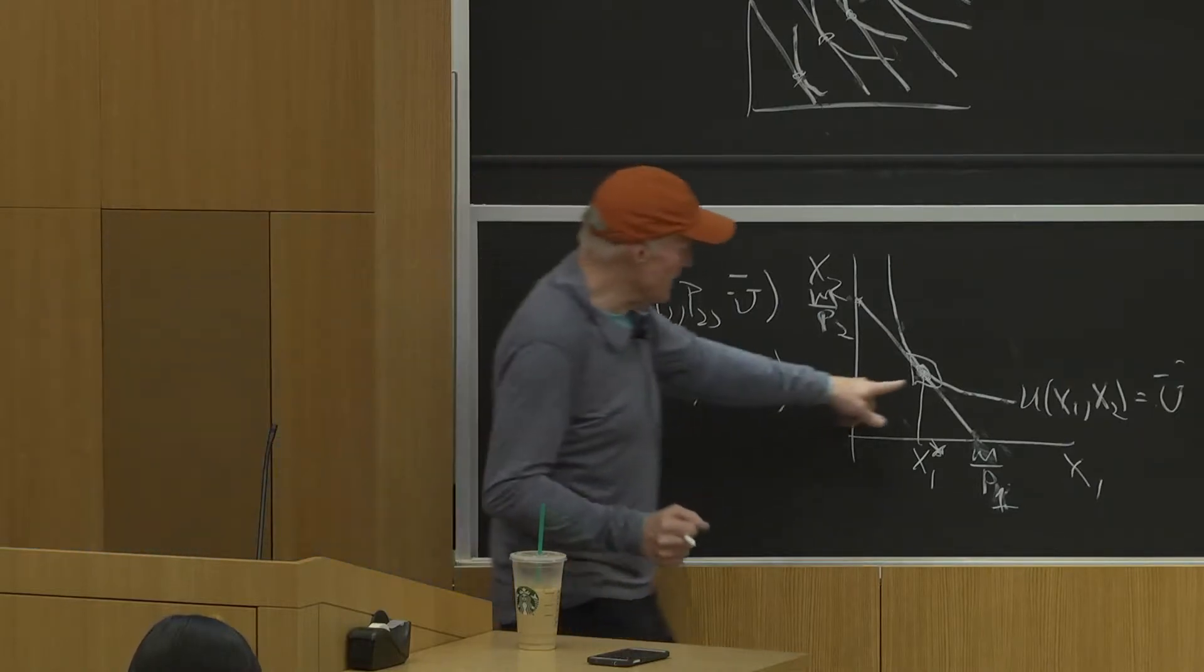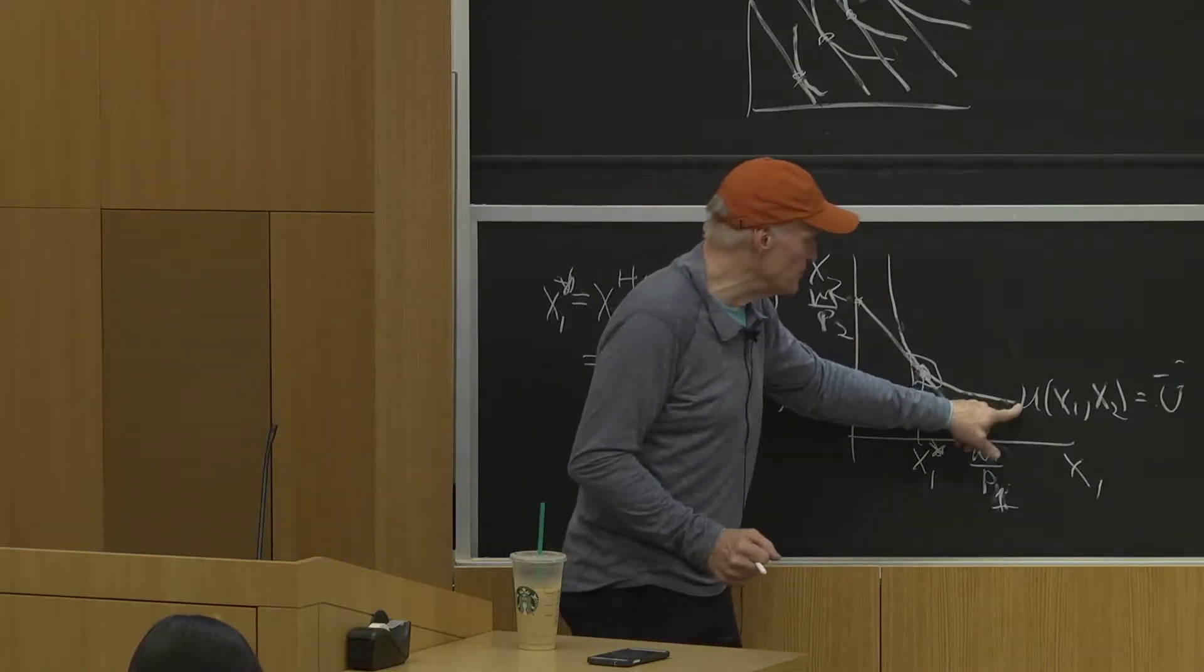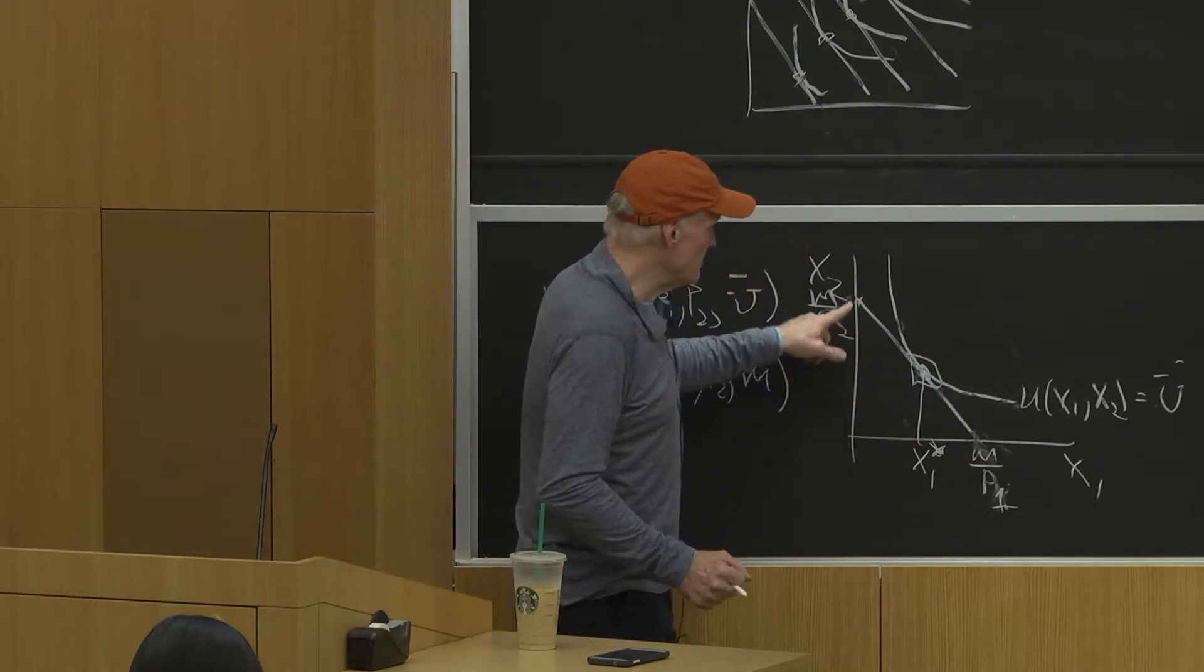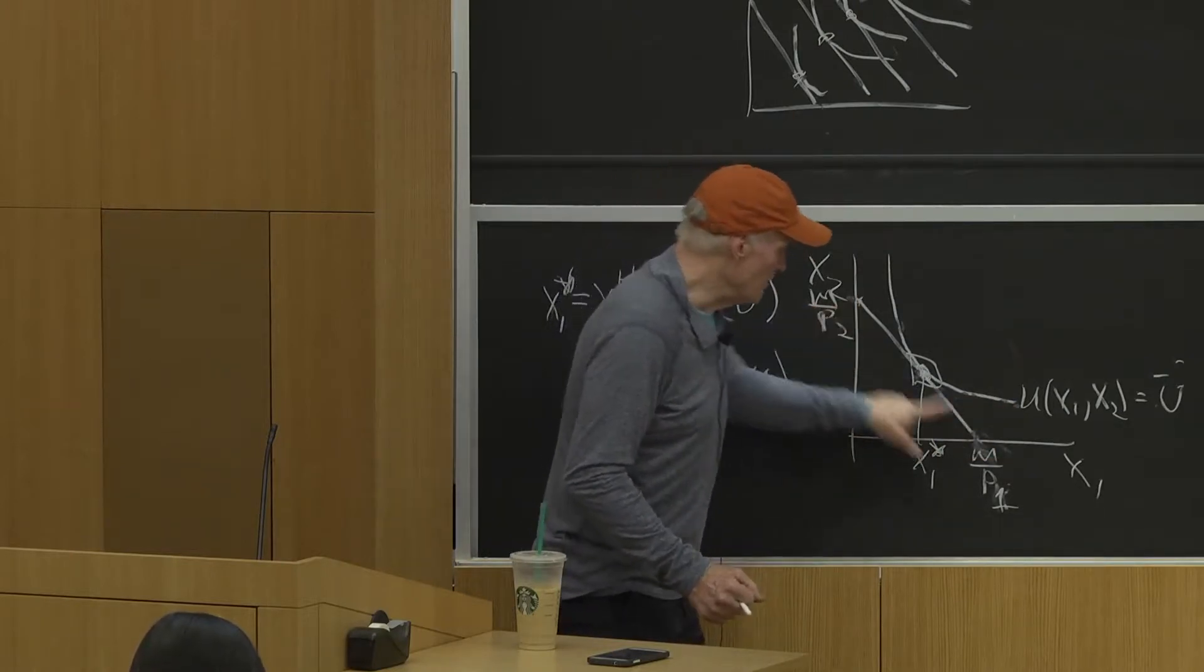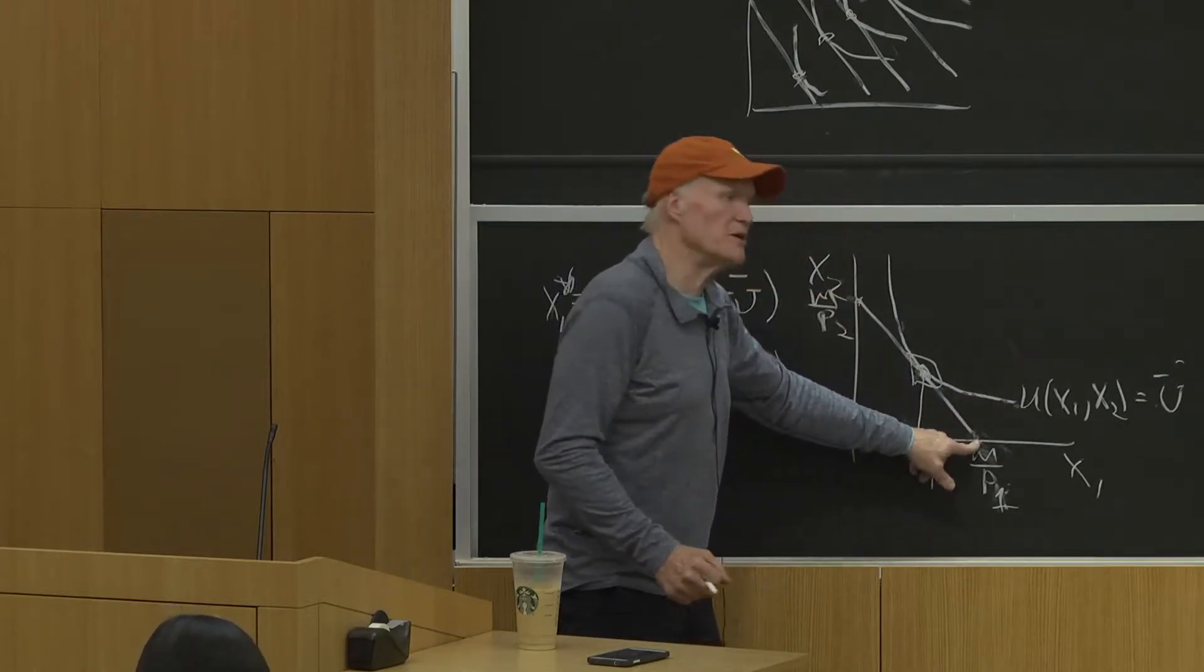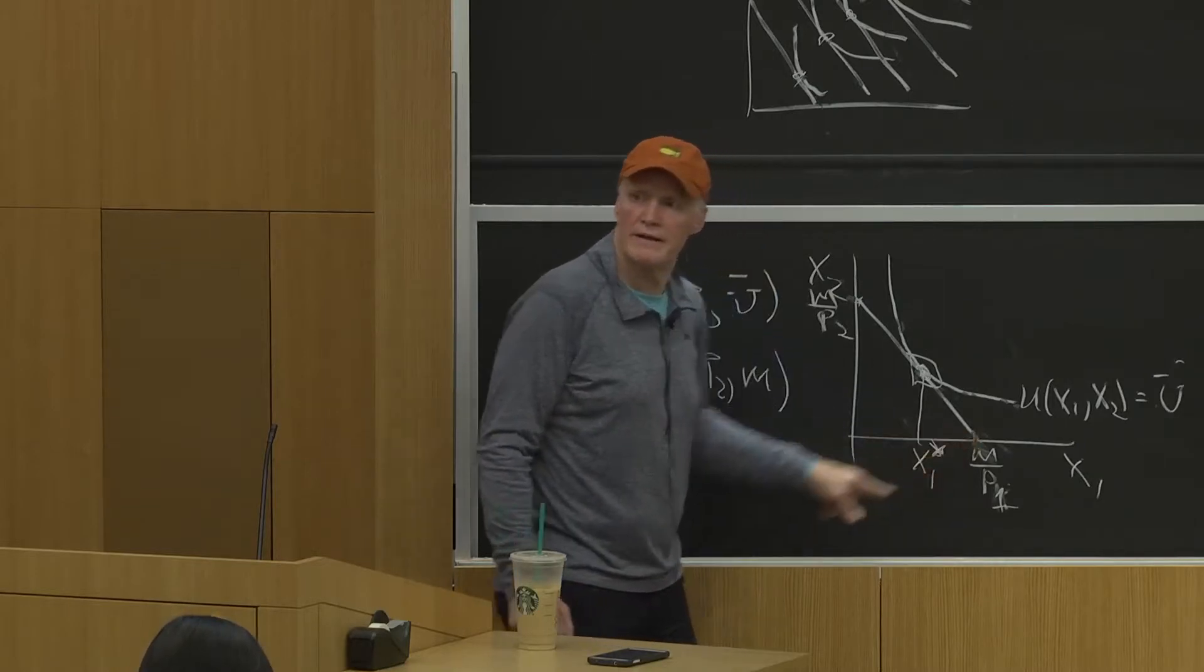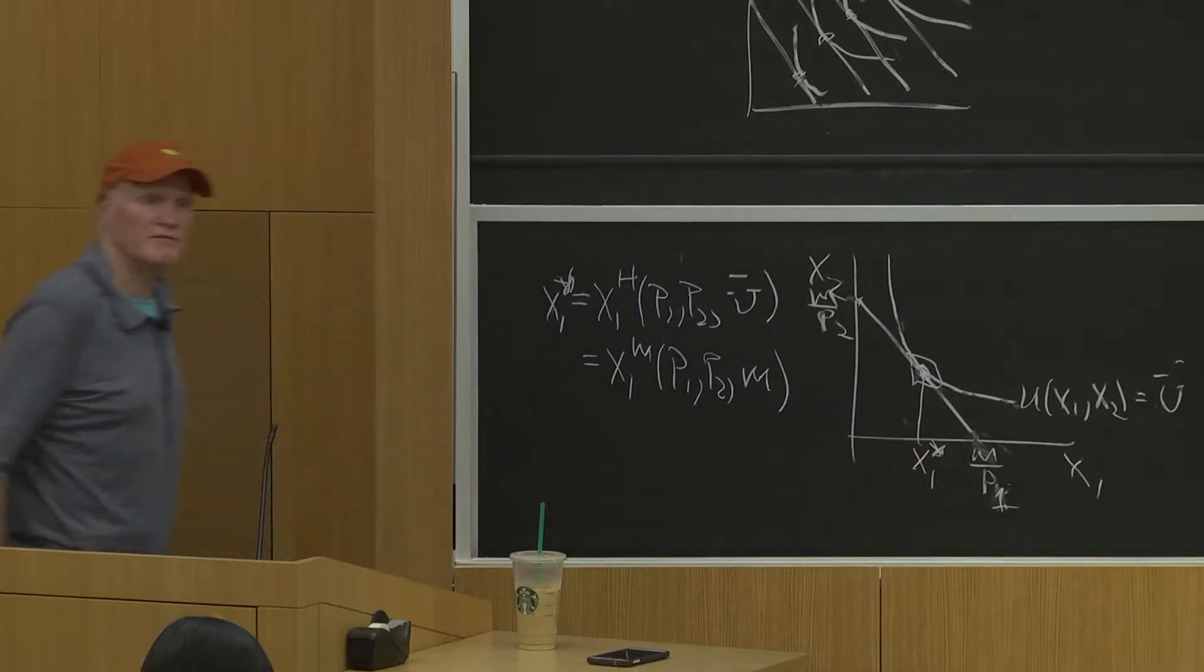In the one case, I'm indexing that choice by the utility level achieved. In the other case, I'm indexing that point by the budget amount that he's spending. That's it. That's the only difference between the two.